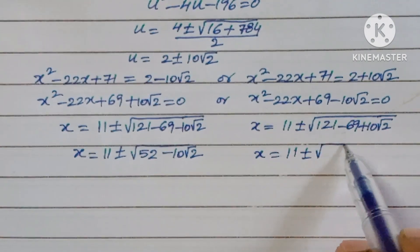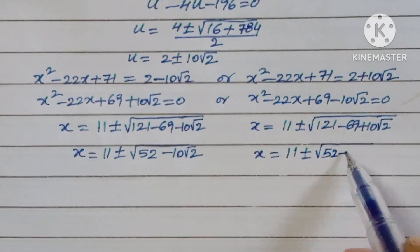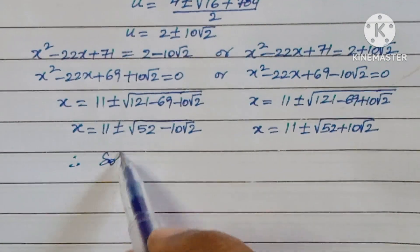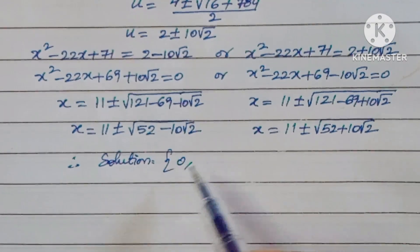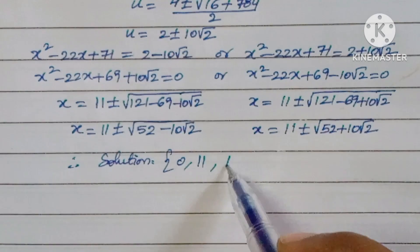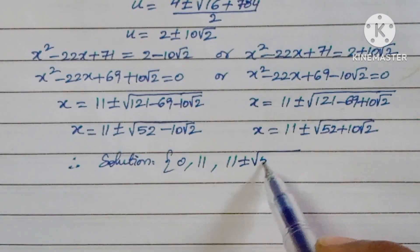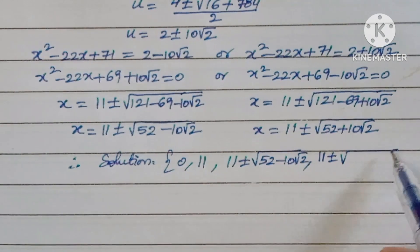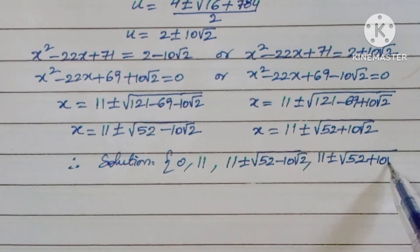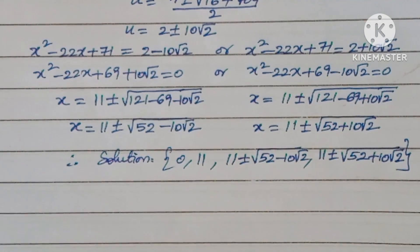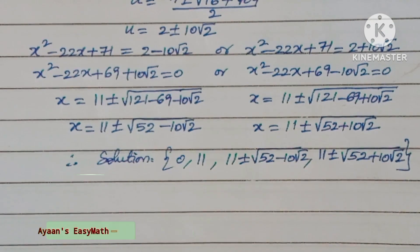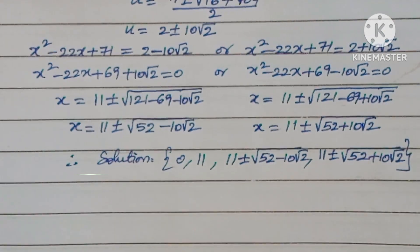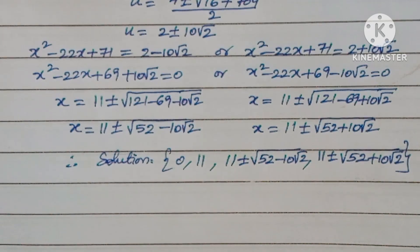Therefore the complete set of solutions is: x equals 0, x equals 11, x equals 11 plus or minus root of (52 minus 10 root 2), and x equals 11 plus or minus root of (52 plus 10 root 2). I hope this information is valuable for you. If so, please subscribe to the channel. Thank you for watching CG Max.